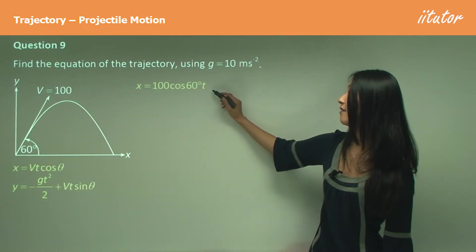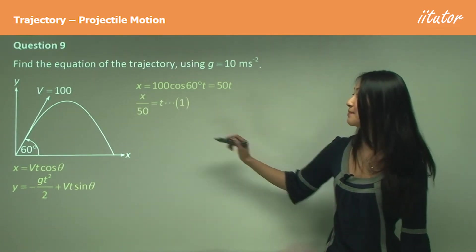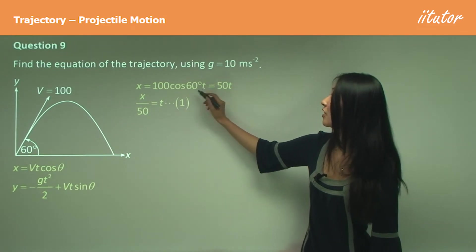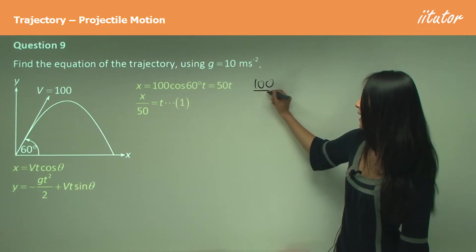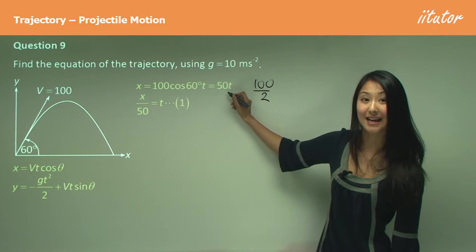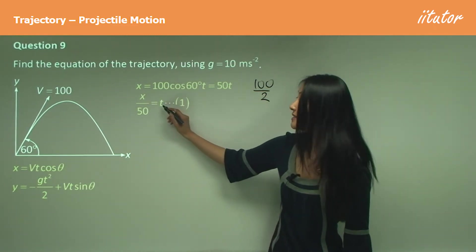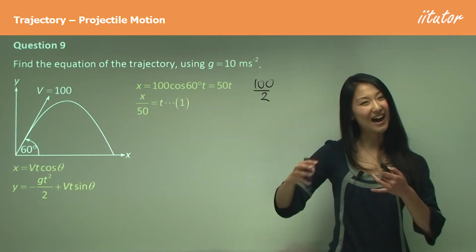And what we want to do is make t the subject there. So what we've done here is we've just worked out that cos 60 degrees is a half, so 100 divided by 2 gives us 50, so that's how we get 50t. And now we've just moved that 50 over, so t equals x over 50, and we can label that as equation 1.